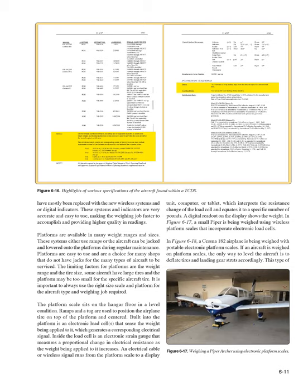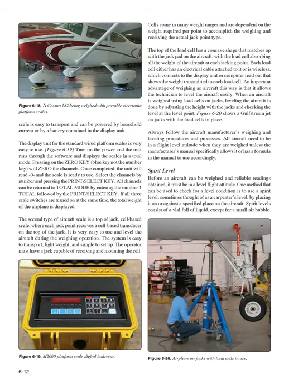It is important to always use the right size scale and platform for the aircraft type and weighing job required. The platform scale sits on the hangar floor in a level condition; ramps and a tug are used to position the airplane tire on top of the platform and centered. Built into the platform is an electronic load cell that senses the weight being applied and generates a corresponding electrical signal. Inside the load cell is an electronic strain gauge that measures a proportional change in electrical resistance as the weight increases.